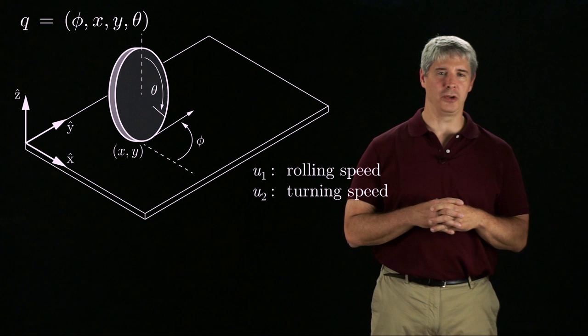U1, the forward-backward rolling angular speed, and U2, the speed of turning the heading direction phi.